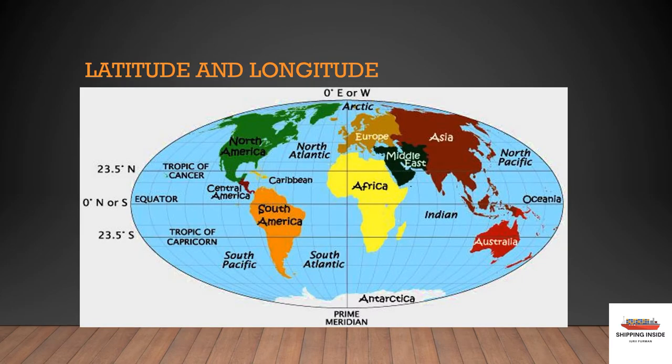Most probably everybody has seen straight vertical and horizontal lines on the map. Let's speak a bit about how mariners identify their position anywhere on earth. Lines that are running from east to west are called parallels of latitude, and lines that are running from north pole to south pole are called meridians of longitude.